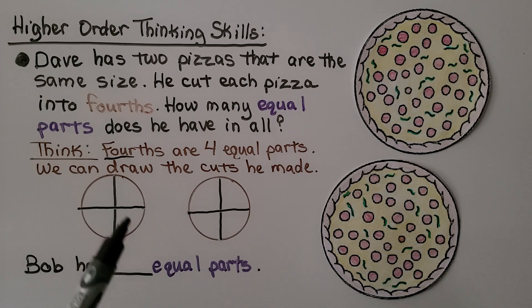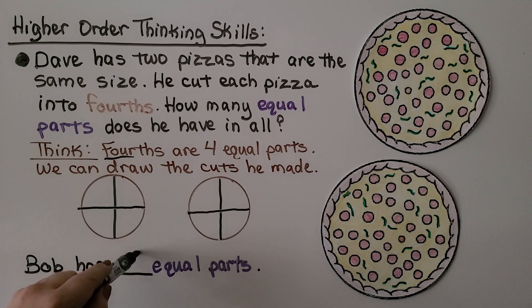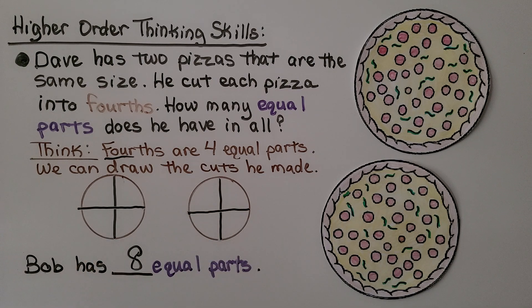He has four plus four. If you said Dave has eight, you're right — eight slices of pizza would be eight equal parts.